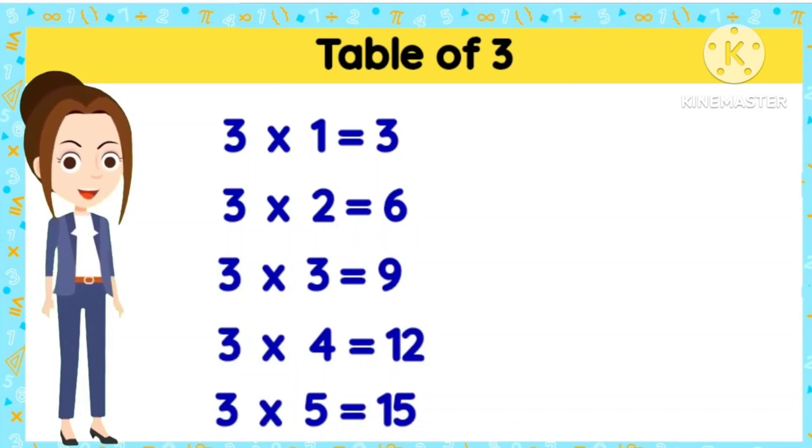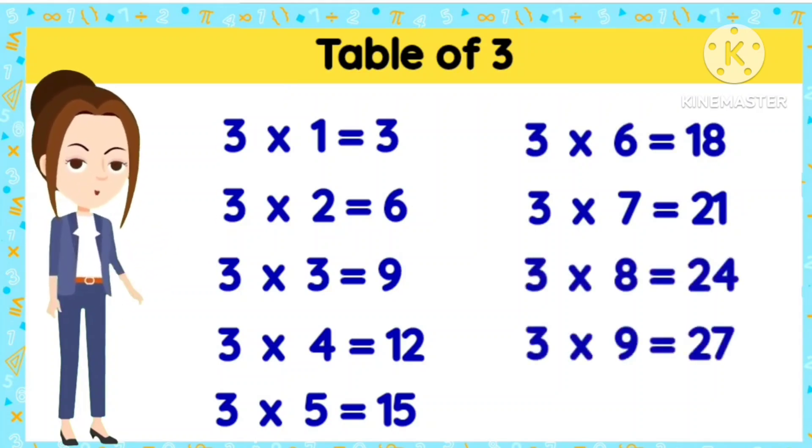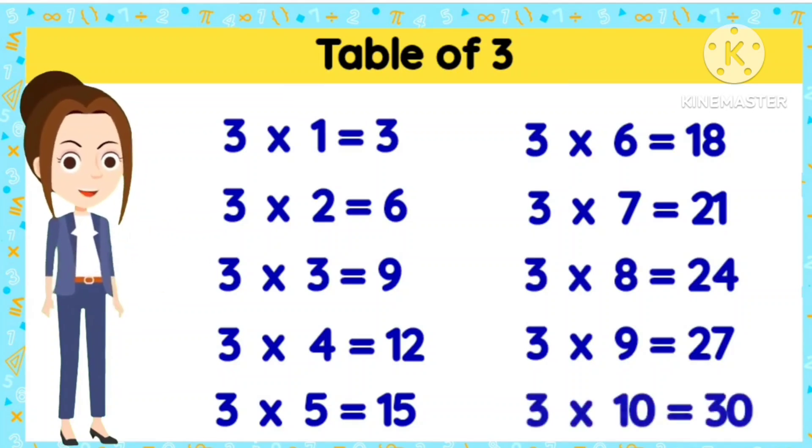3 5s are 15. 3 6s are 18. 3 7s are 21. 3 8s are 24. 3 9s are 27. 3 10s are 30.